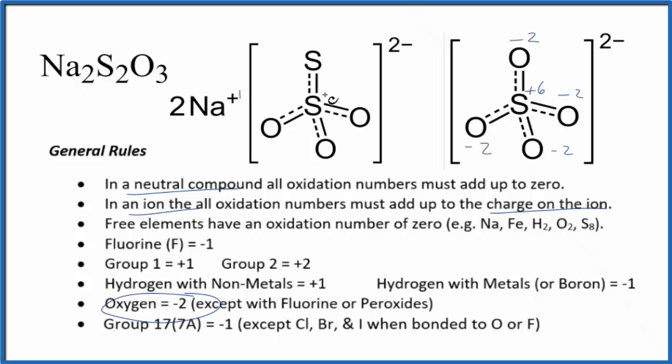Back to our thiosulfate ion. This should be plus six, and this sulfur would be minus two. All the oxygens are minus two. So plus six and minus eight gives us our two minus. It's equal to the ionic charge. So these are the specific oxidation numbers for each sulfur here in Na2S2O3.